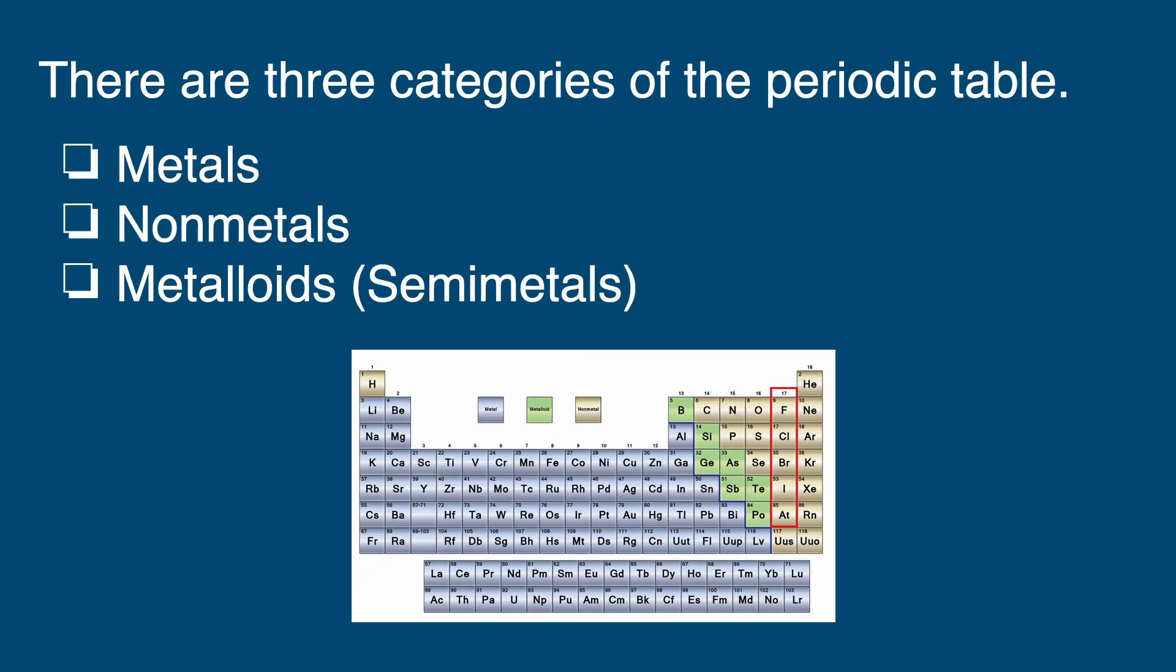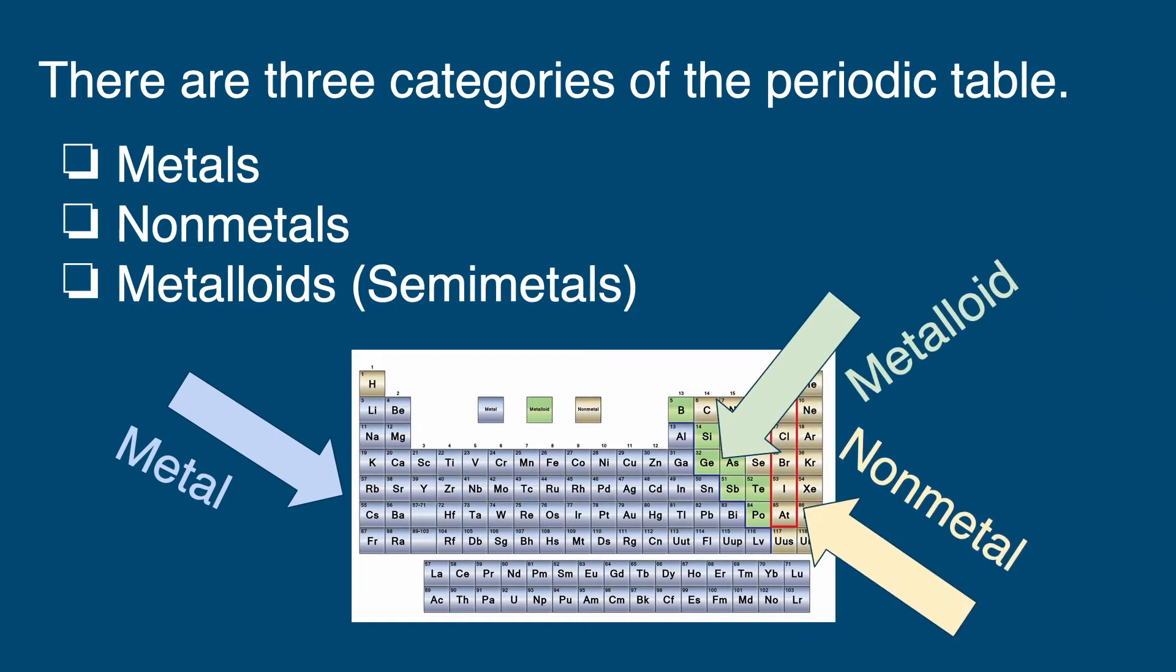Now there are three main categories of the periodic table: metals, non-metals, and metalloids, otherwise known as semi-metals.